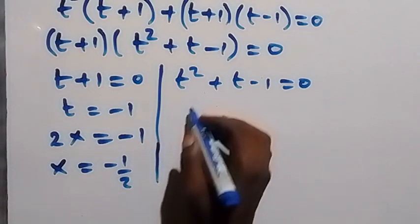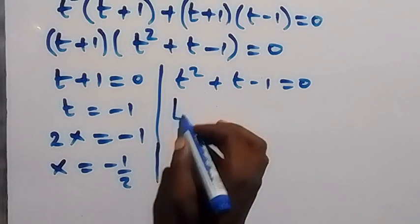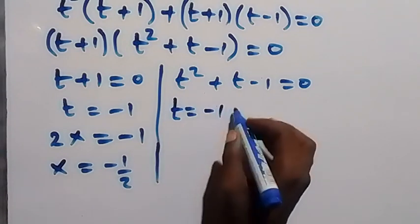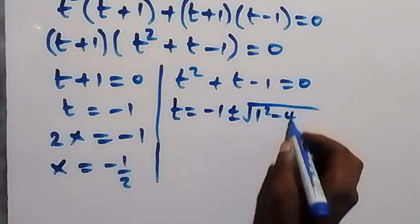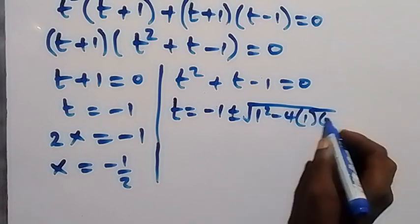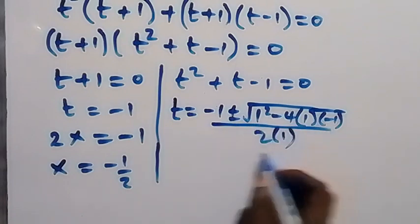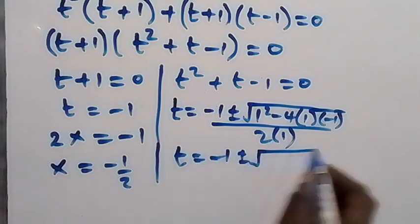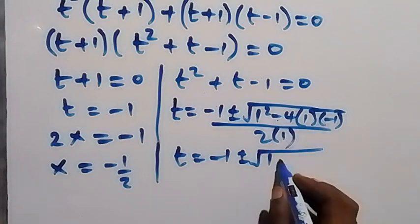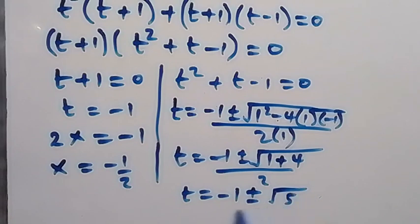Also from this side we can use the formula to solve this quadratic equation. So t will be equal to minus b, which is minus 1, plus or minus square root of b squared — 1 squared — minus 4ac, where a is 1 and c is minus 1. Then over 2 times a, which is 2 times 1. So t equals to minus 1 plus or minus square root of 1 plus 4, over 2. So t equals to minus 1 plus or minus square root of 5, over 2.